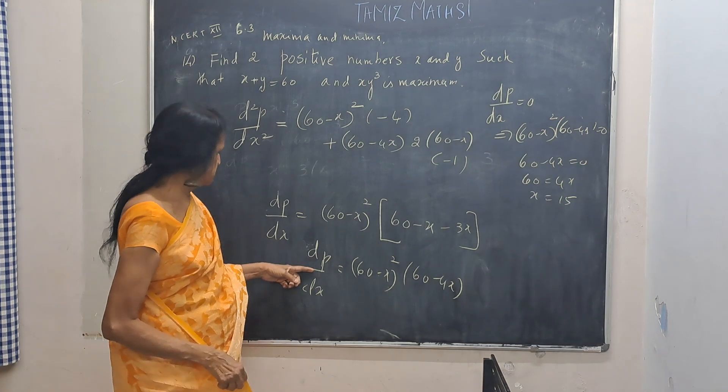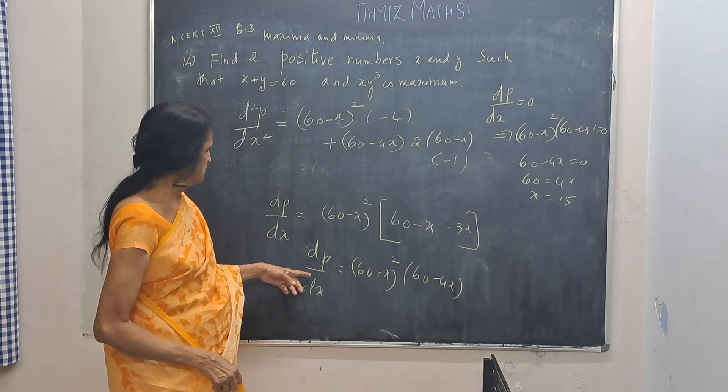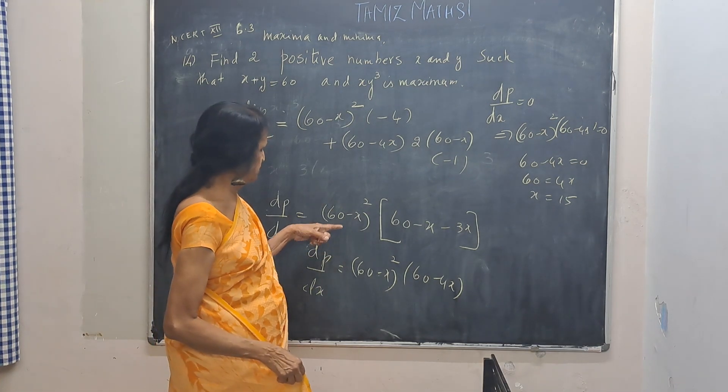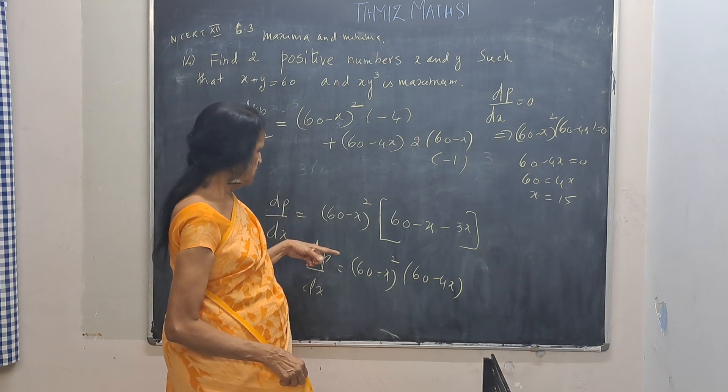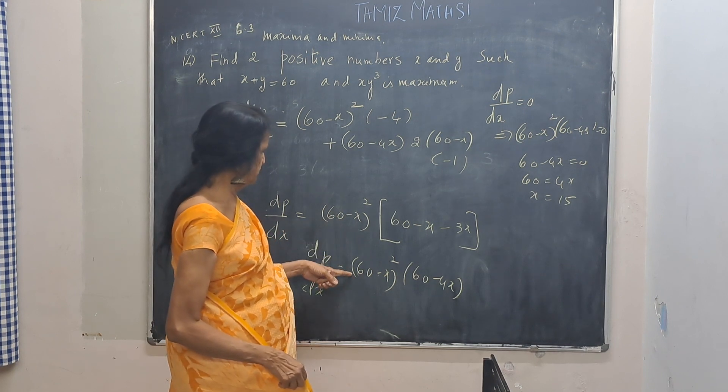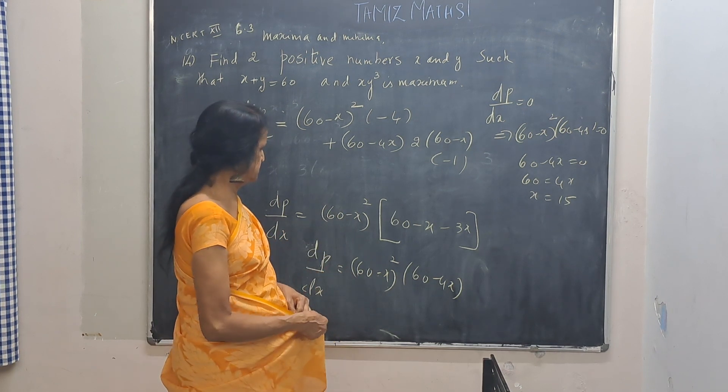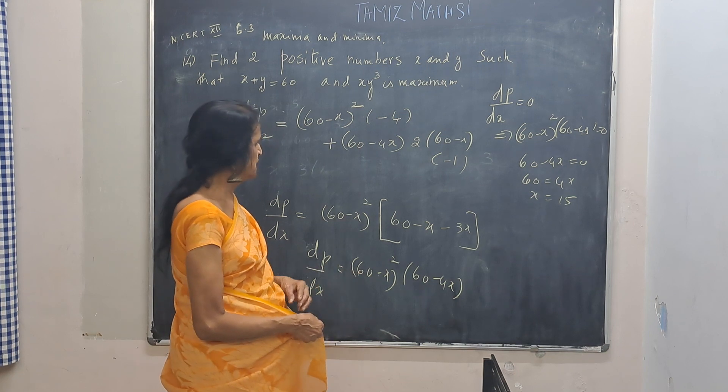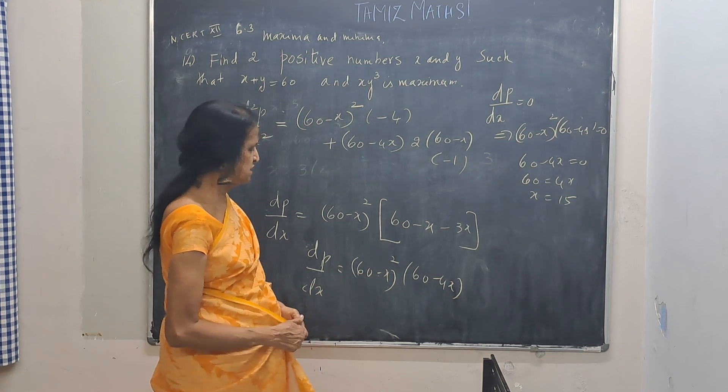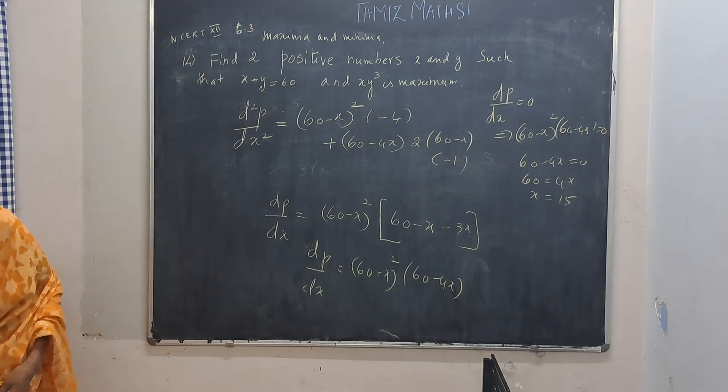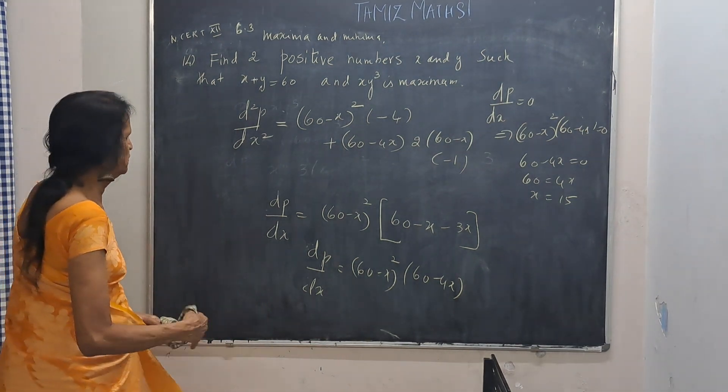DP by dx, I have differentiated this. First function, derivative of second function minus 4. Second function, derivative of first function. 60 minus x whole square derivative is 2 into 60 minus x. Derivative of 60 minus x will be minus 1.